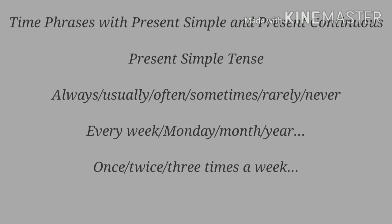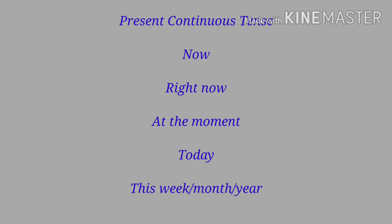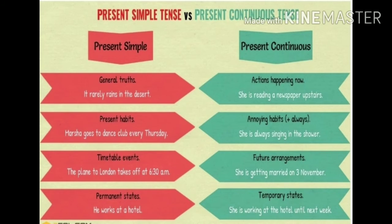The simple present tense is used with time expressions like: always, usually, often, sometimes, rarely, never, every week, Monday, month, or year, once, twice, or three times a week. The present continuous tense is used with words like: now, right now, at the moment, today, this week, this month, or this year.